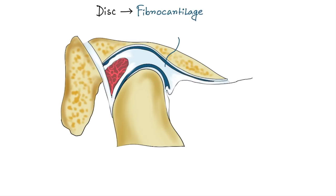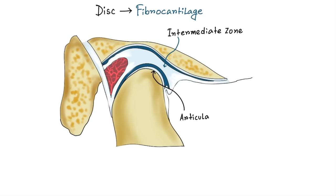In the sagittal plane, the disc can be divided into three regions according to thickness. The central area is the thinnest and is called the intermediate zone. The disc becomes considerably thicker both anterior and posterior to the intermediate zone. In the normal joint, the articular surface of the condyle is located on the intermediate zone of the disc. The precise shape of the disc is determined by the morphology of the condyle and mandibular fossa.